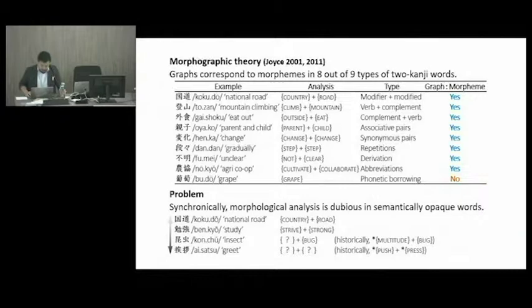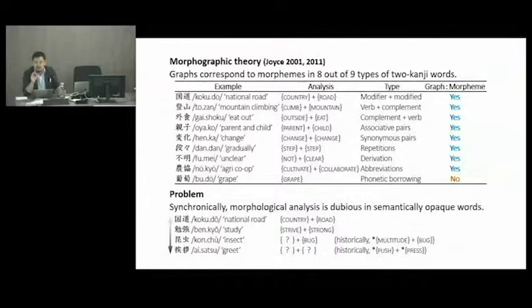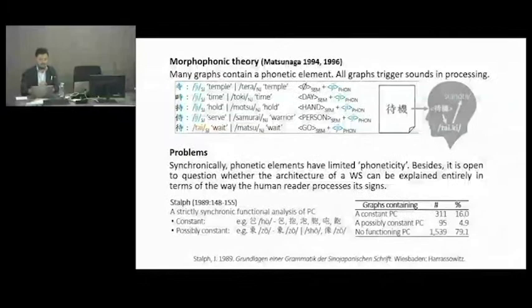So we can't really analyze the word into two meaningful parts because the first part is meaningless in today's Japanese. The last word, aisatsu meaning greet, has two such graphs with obsolete meanings: ai used to mean push and satsu used to mean press. Push and press gives greet — even if you knew the original meanings, it is very difficult to get the meaning of the word itself. You have to look into the Zen Buddhist tradition if you are interested in that.